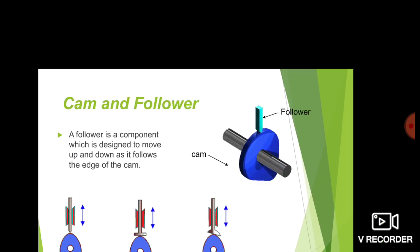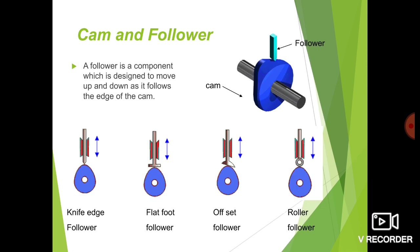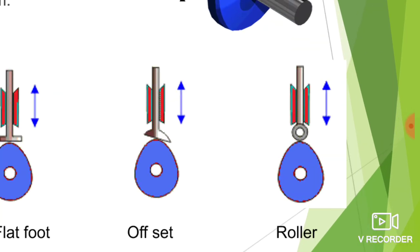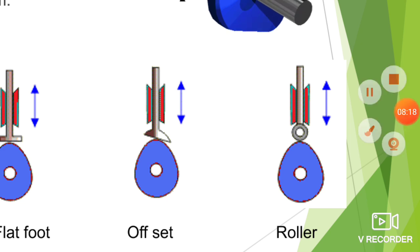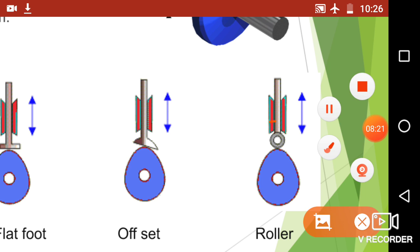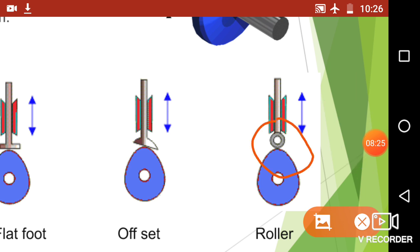The next type is the roller follower. At the end of the follower there is a roller. This is known as a roller follower. There is very less friction between cam and follower because of the roller shape. As the cam rotates the follower will reciprocate, and the contact surface has a line contact — because whenever two circles roll over each other they generate a line contact only. So cam and follower constitutes a higher pair in all these examples.